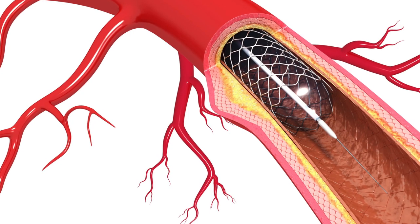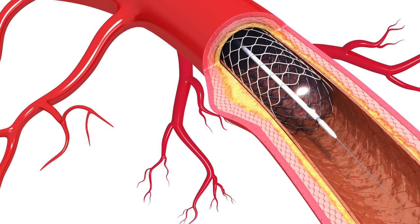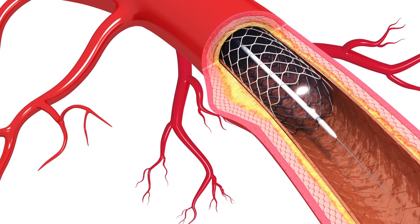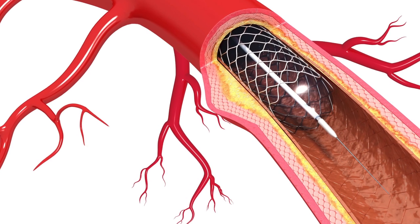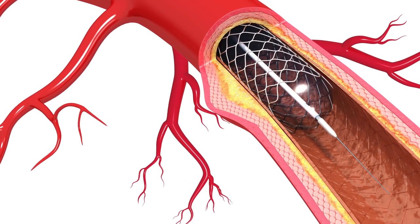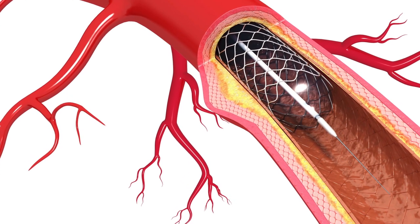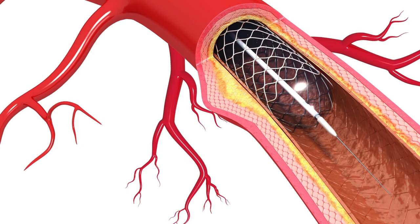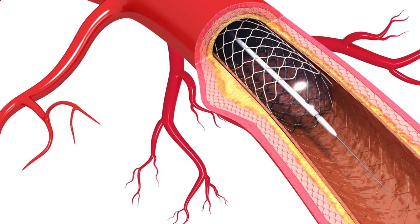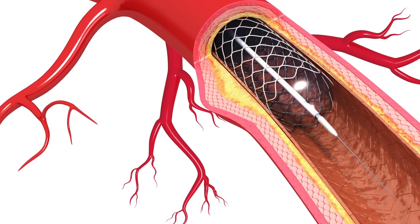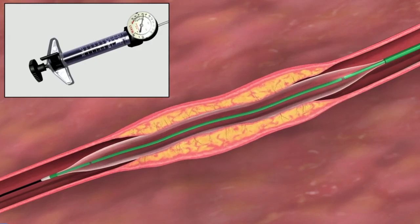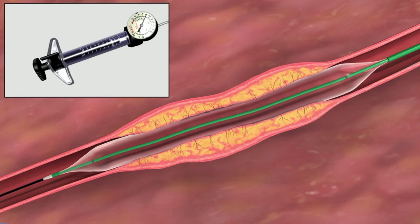Usually we use catheters and wires that are about the size of a wet spaghetti noodle to go within the vessels and help us reach everywhere we need to reach. Sometimes if the vessel is small or tight — what we call stenosis — we use balloons inside the vessel to open it up.